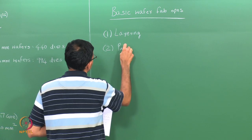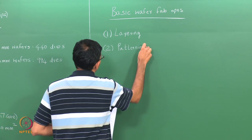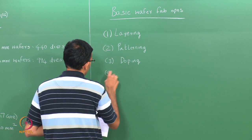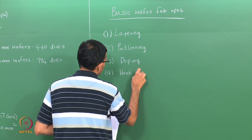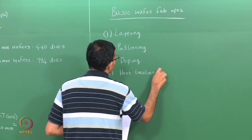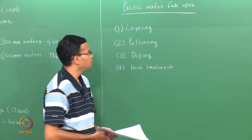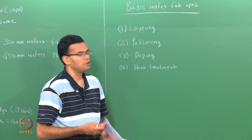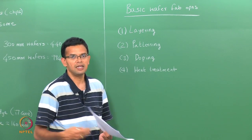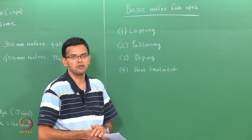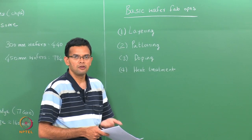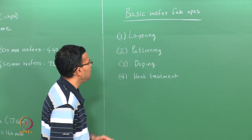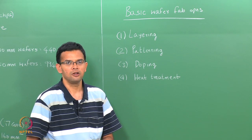These are 4 broad categories into which you can divide your fab operations. If you think of your fab as an assembly line, then your wafers go through each and every step in an assembly line process and you can have different combinations. You could have a layering step followed by a patterning step, followed by heat treatment, then doping, then layering and so on. Today we will look briefly at each of these techniques, and in subsequent classes we will look at them in detail.